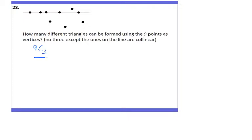The problem with 9C3 is that it includes cases where, for example, I choose three dots that lie on a straight line. When I connect three dots that are collinear, I don't get a triangle. So the number of triangles is not simply 9C3 — I also need to subtract the cases where I've connected three collinear dots.